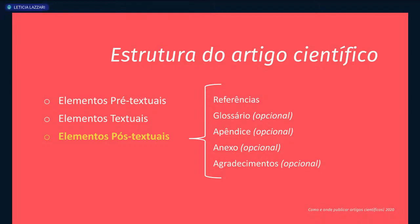Sobre os elementos pós-textuais, que são a parte final do artigo: temos as referências, o glossário, o apêndice, o anexo e os agradecimentos. Apenas o primeiro item — as referências — é obrigatório. Os outros itens não são muito comuns em artigos científicos, mas são permitidos.